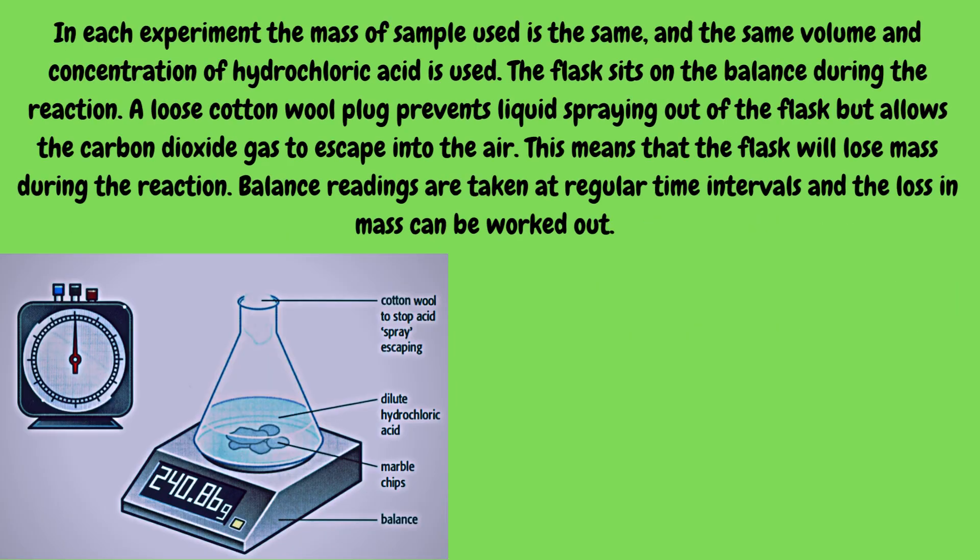In each experiment, the mass of sample used is the same, and the same volume and concentration of hydrochloric acid is used. The flask sits on the balance during the reaction. A loose cotton wool plug prevents liquid spraying out of the flask but allows the carbon dioxide gas to escape into the air. This means the flask will lose mass during the reaction. Balance readings are taken at regular time intervals and the loss in mass is calculated.